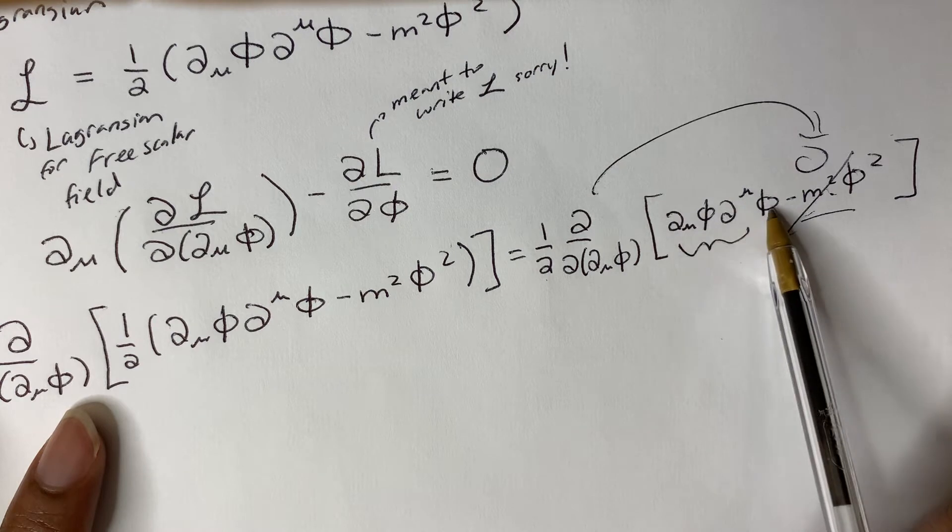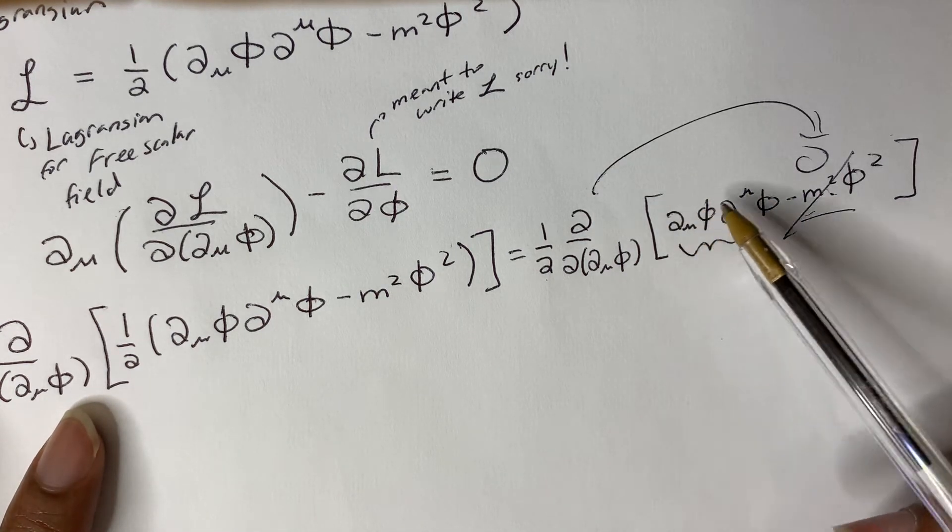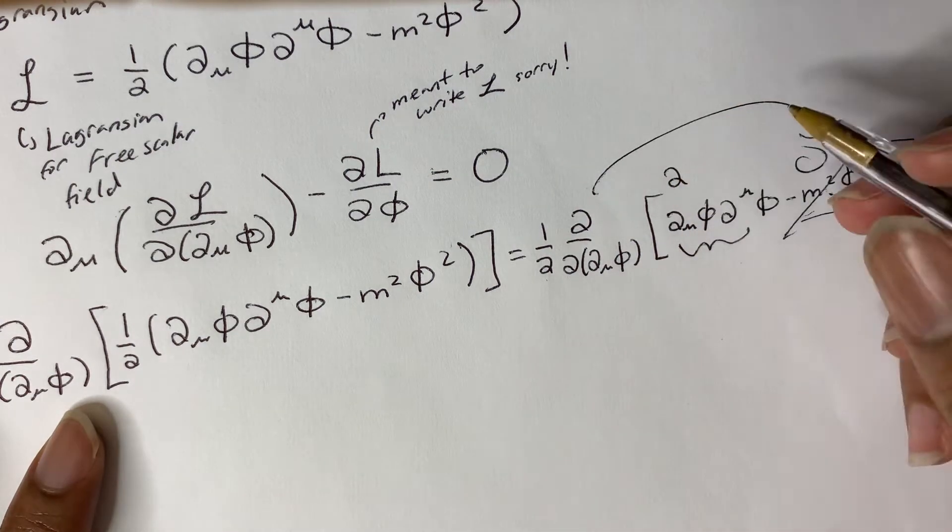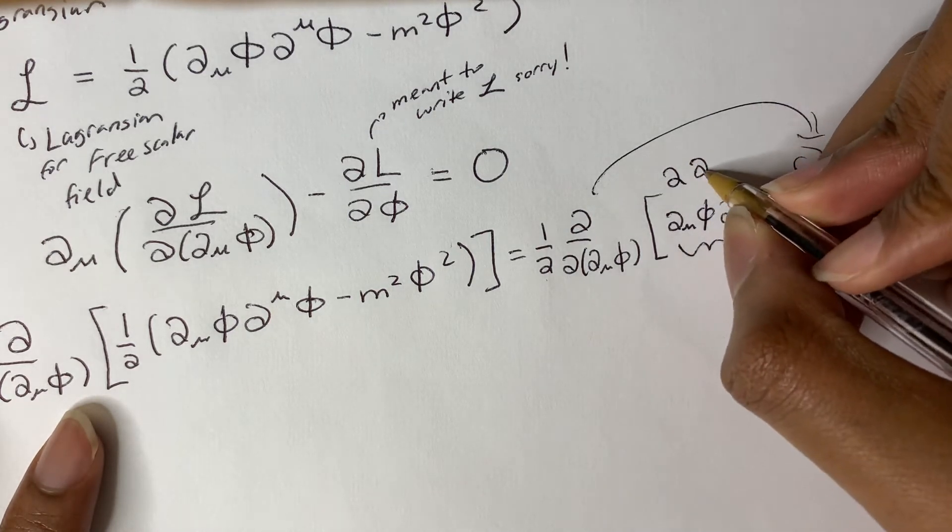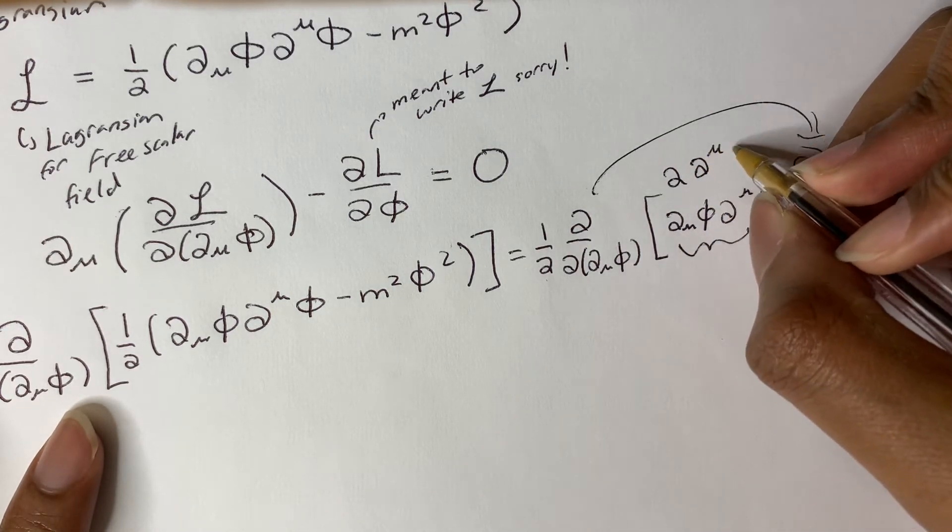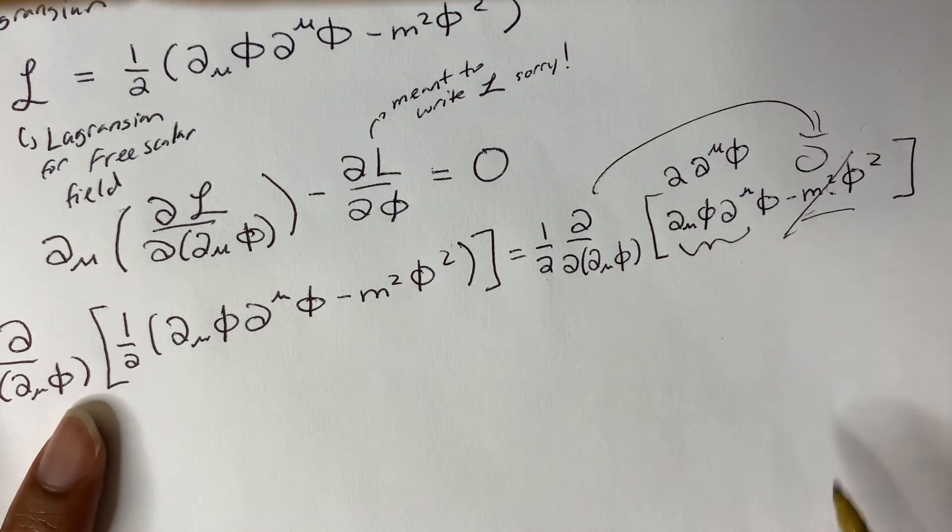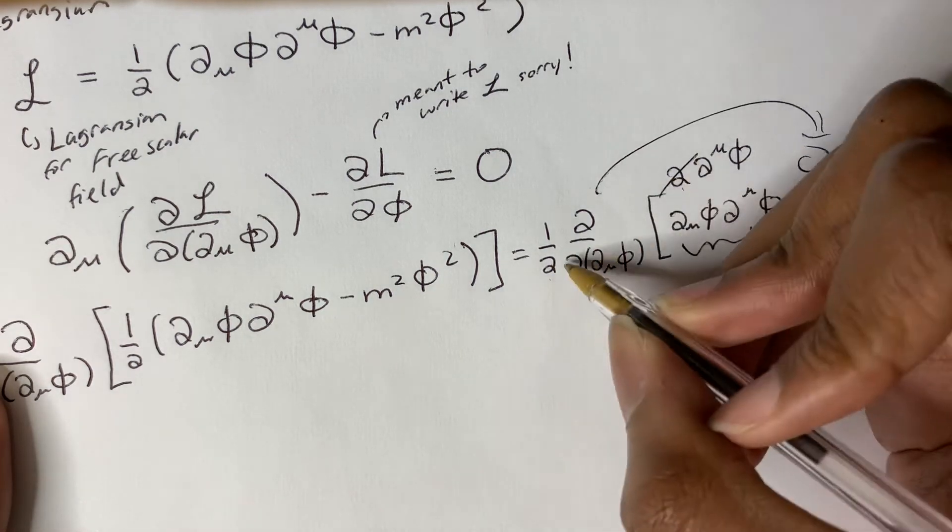Partial mu phi, partial mu phi. So it's sort of like partial mu phi squared. So the derivative of that would be 2 partial mu phi. That would be the derivative of that.